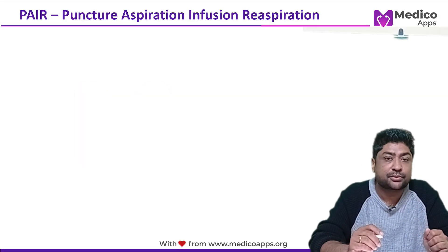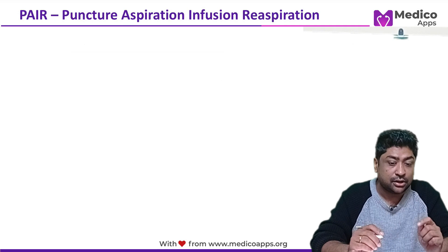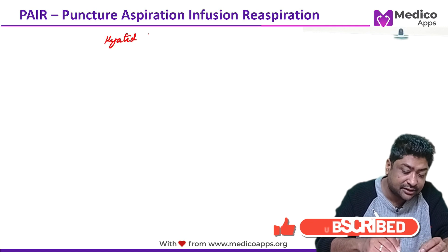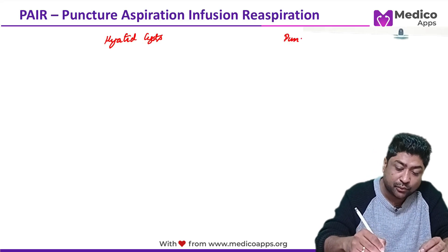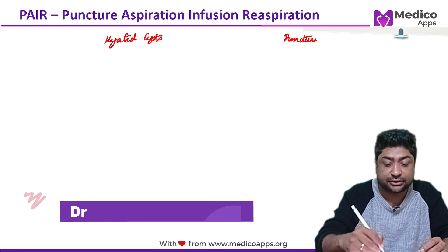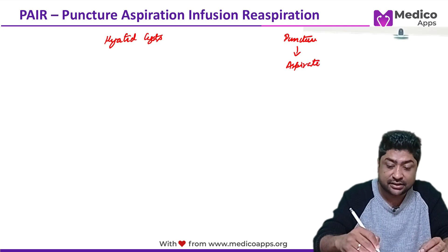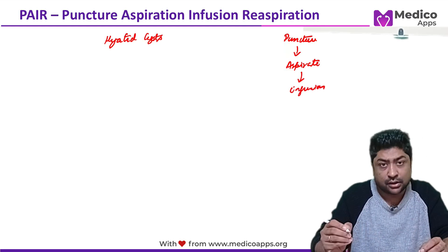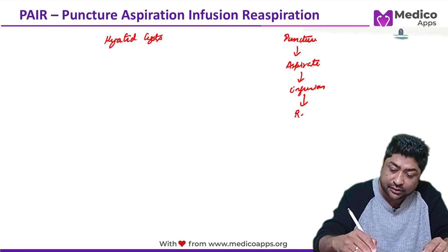Before discussing the question, let me explain the important technique of PAIR, which has been asked quite a few times in past few years in various examinations. PAIR is a technique used to treat hydatid cysts. It is a four-step process: the first step is an ultrasound-guided puncture to reach the cyst, then we aspirate the content of the cyst.